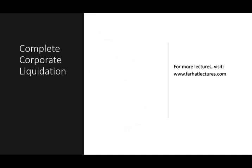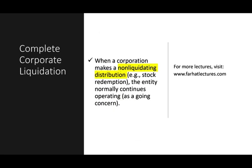We are dealing with complete corporate liquidation, which is in contrast to the non-liquidating distribution covered in the prior chapter. In the prior chapter we looked at partial liquidation or non-liquidating distribution. When a corporation makes a non-liquidating distribution — called a stock redemption — the entity normally continues operating as a going concern.